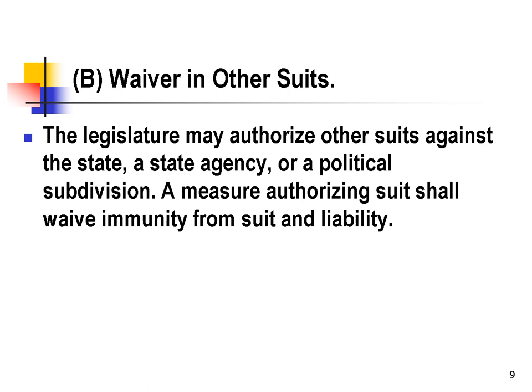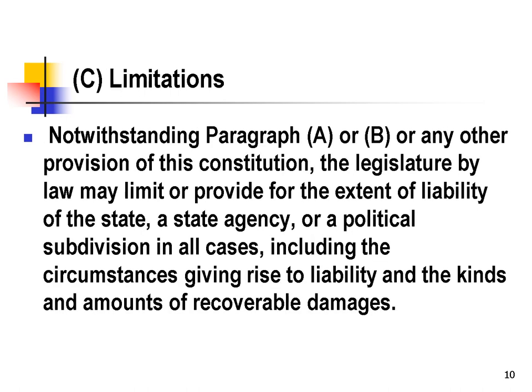However, Section B, Waiver and Other Suits, allows the legislature to expand this waiver of immunity into other areas if the legislature chooses. There's a limitation on the abolishment of sovereign immunity: while the Constitution has abolished sovereign immunity, the legislature by law may limit or provide for the extent of liability. So the legislature appears to be able to reinstate immunity through legislation, and it looks like the legislature can fairly clearly regulate the level of immunity for government actors in Louisiana.